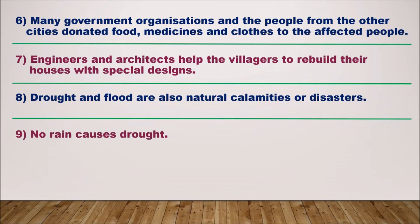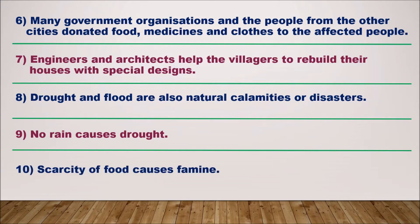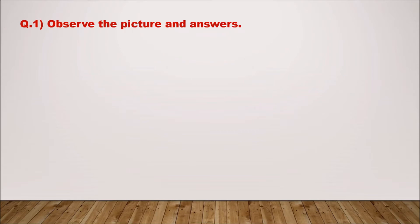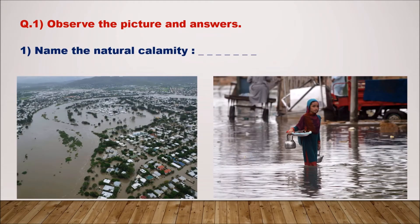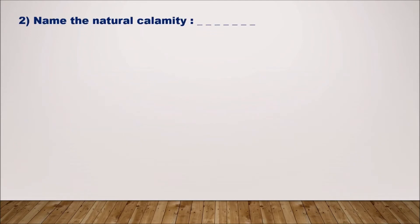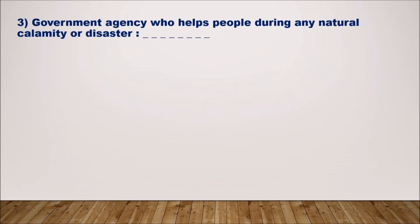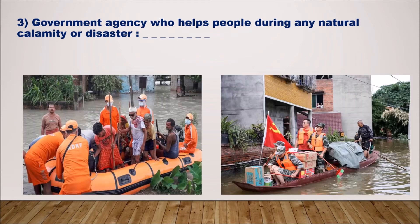No rain causes drought; scarcity of food causes famine. Now let us see the observation questions. Question one: observe the picture carefully and name the natural calamity. The answer is flood. Second: name the natural calamity shown — drought. Drought is the correct answer.